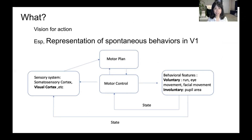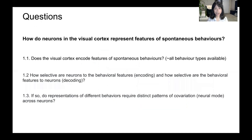We are interested in the relationship between vision and action. We know that the visual system can dynamically interact with the motor system — it might be actively engaging in the motor plane or simultaneously receiving information from the motor system. So we asked: how do neurons in the visual cortex represent features of spontaneous behaviors? Specifically, does the visual cortex encode features of spontaneous behaviors? How selective are neurons to behavioral features and how selective are behavioral features to neurons? And if so, do representations of different behaviors require distinct patterns of covariation across neurons?